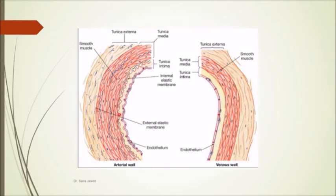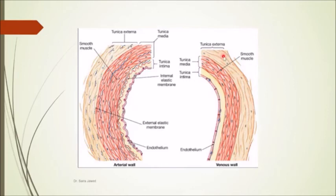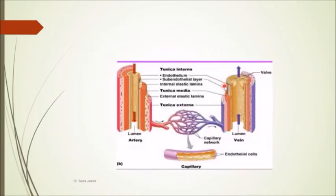Comparing vein and artery histology: the internal elastic lamina is well-developed in arteries but sometimes absent or not well-developed in veins. The tunica media is thinner in veins compared to arteries. The tunica adventitia is sometimes thicker than or equivalent to the tunica media in veins.